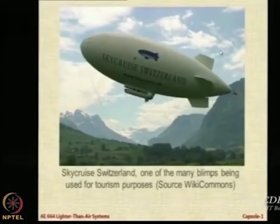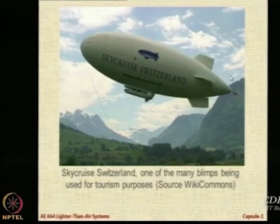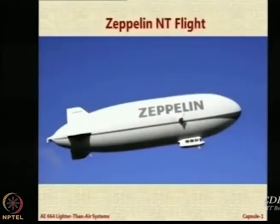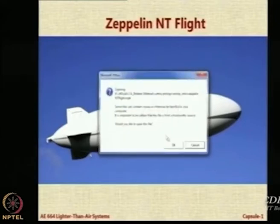The company decided to use it for commercial purposes, and with this the airship came back. Sky Ship 600 is one of the modern airships — we have already seen a video of the Zeppelin NT. Airships then began being used for commercial applications, such as in Switzerland for tourism purposes. The latest example is the Zeppelin NT.